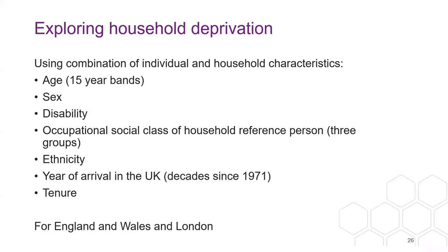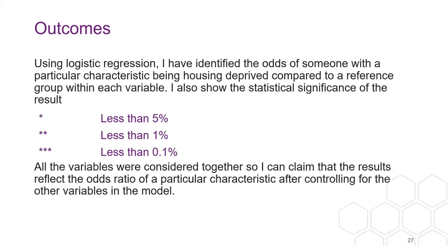Let's have a look at what comes out. I've done this example looking at household deprivation. I've taken age in those bands I showed before, sex, disability, occupational social class grouped into three, ethnicity, year of arrival in the UK in decades since 1971, and tenure. I've done that for England and Wales and for London separately, and I've identified using odds ratios.